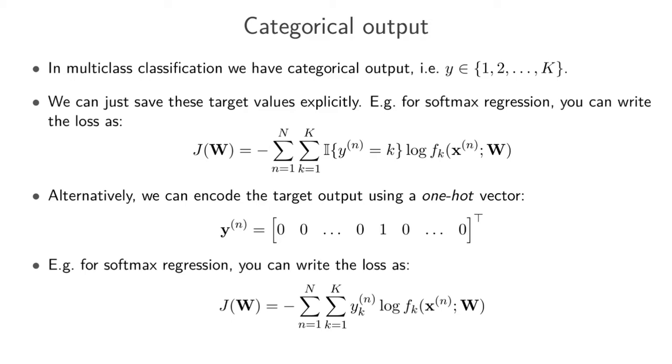The alternative, instead of just storing these values—input 1 belongs to class 2, input 5 belongs to class 25, and so on—instead of explicitly encoding these indices for the different classes, what we can do is use something called the one-hot vector. A one-hot vector is a vector of all zeros apart from the dimension corresponding to the class that this input belongs to.